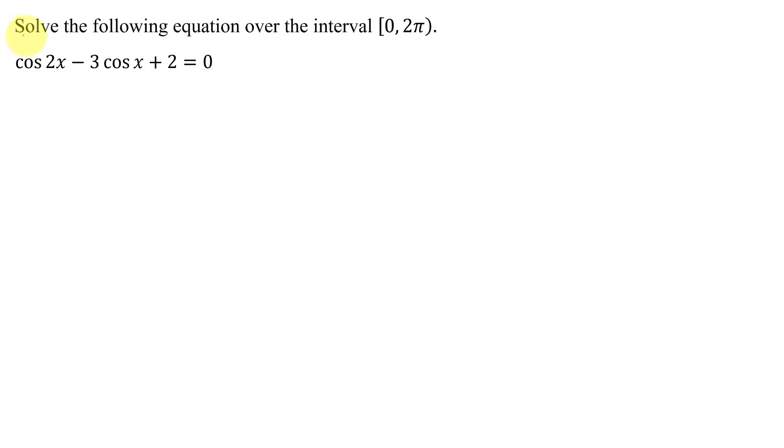In this example, I need to solve the following equation over the interval 0 to 2π. The equation is cosine of 2x minus 3 times cosine of x plus 2 equals 0. What type of equation do we have here?